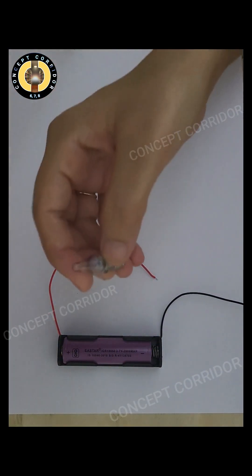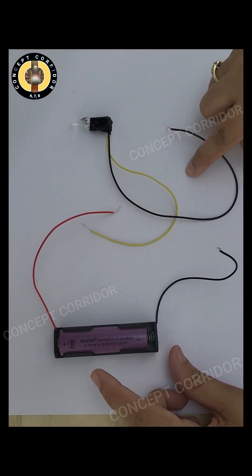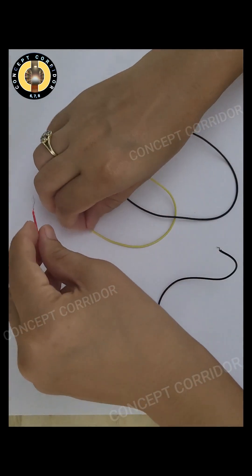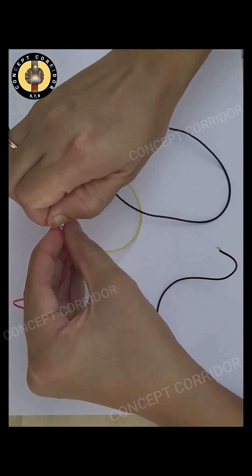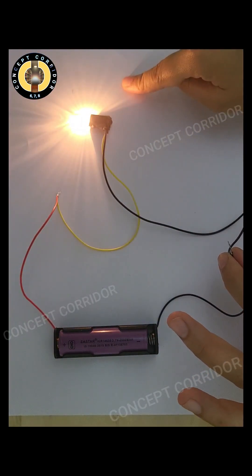Take the torch bulb and join wires on the two terminals of this torch bulb. First, I will join the positive terminal to the yellow wire and negative terminal to the black wire. You can see the bulb is glowing.